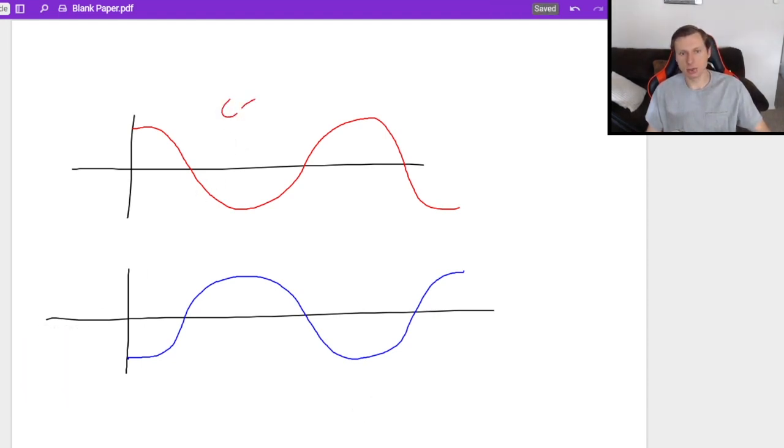So again, this is the cosine function, cosine x, and below is negative cosine x because it starts from the bottom.